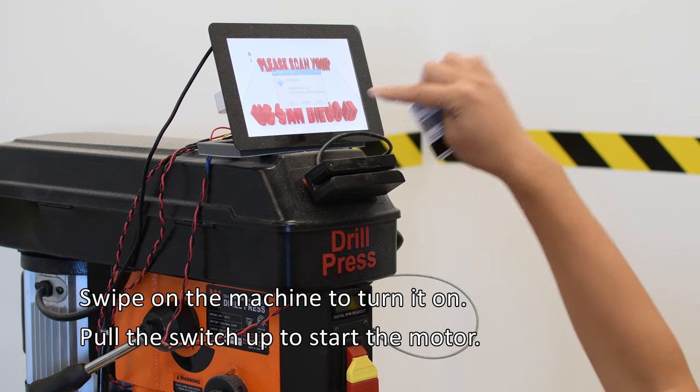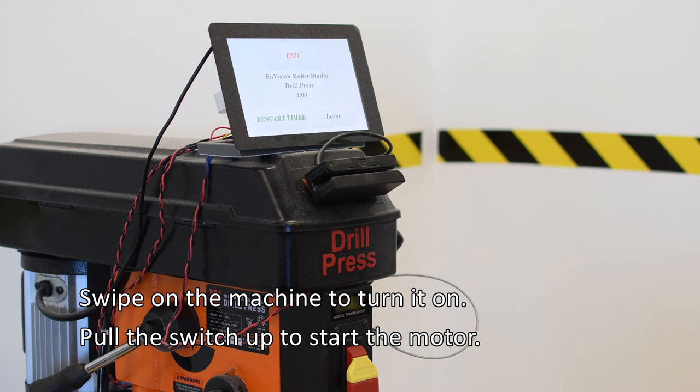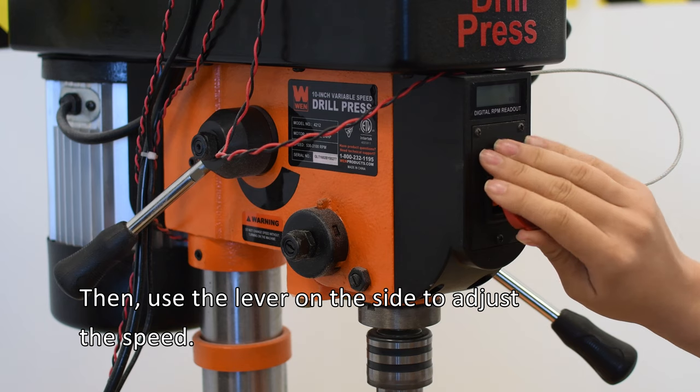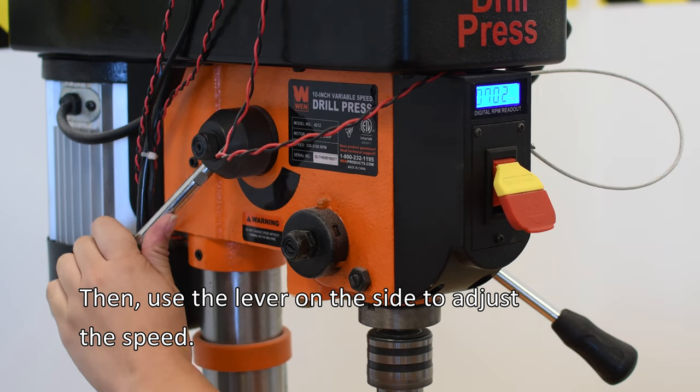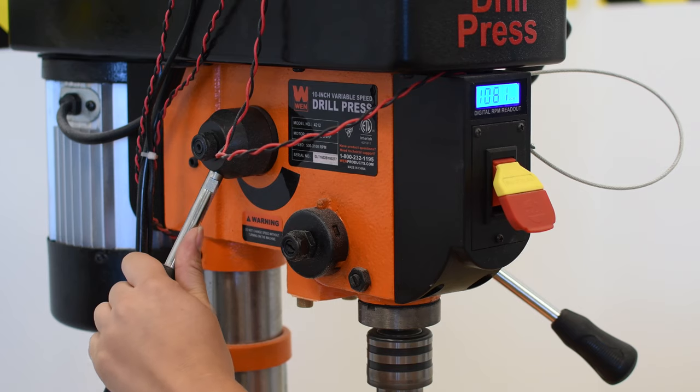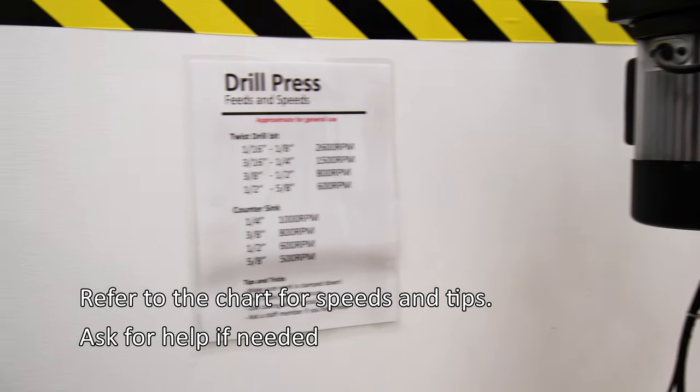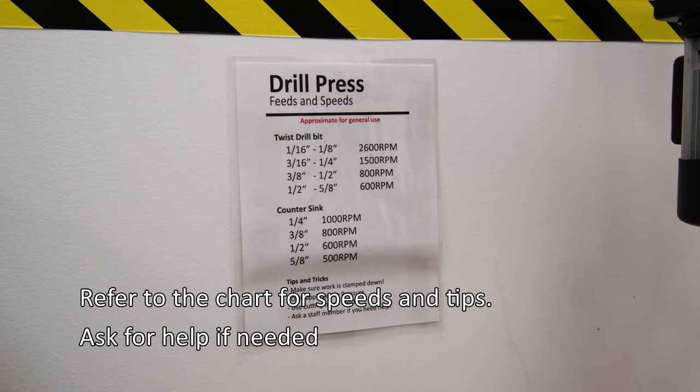Swipe in on the machine to turn it on. Pull the switch up to start the motor and use the lever on the side to adjust the speed. Refer to the chart for speed and tips. Ask for help if needed.